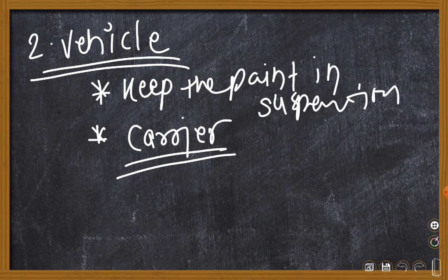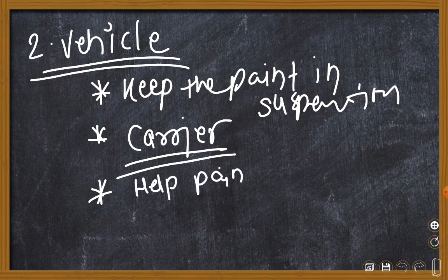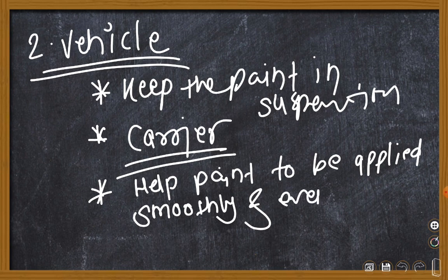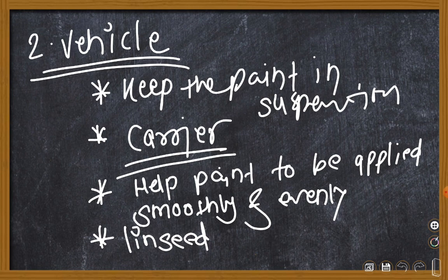What a vehicle exactly does - it helps the paint to spread evenly without any discontinuity in its application. The function of the vehicle is to help paint to be applied smoothly and evenly. Various forms of linseed oil - boiled linseed oil or raw linseed oil - are used as vehicle. Most forms of linseed oil make up the vehicle of the paint.